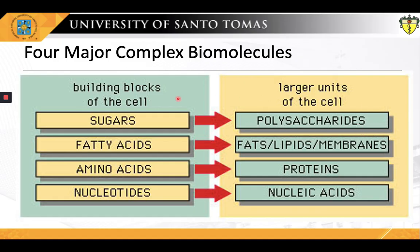Briefly stated, all organic molecules are synthesized from and broken down into the same set of simple compounds: simple sugars, fatty acids, amino acids, and nucleotides. Both their synthesis and their breakdown occur through sequences of chemical changes that are limited in scope and follow definite rules. As a consequence, compounds in a cell are chemically related and most can be classified into a small number of distinct families. These are then polymerized to constitute larger, more complicated macromolecules like polysaccharides, proteins, lipids, and nucleic acids — exemplified by DNA and RNA.